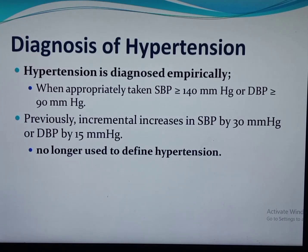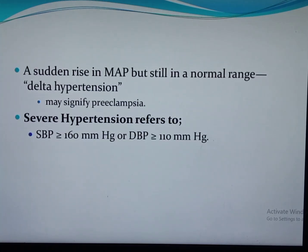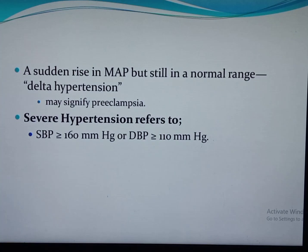The previously used criteria — an increase in systolic blood pressure by 30 mmHg or diastolic by 15 mmHg from mid-pregnancy, even if absolute values were less than 140/90 — are no longer used, because blood pressure normally rises from mid-pregnancy. There is also the concept of delta hypertension: a sudden rise in mean arterial blood pressure even within the normal range may signify preeclampsia, but it is not used as a diagnostic criterion. However, these women have increased risk of HELLP syndrome and eclampsia and need to be followed.